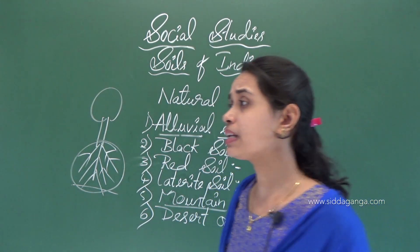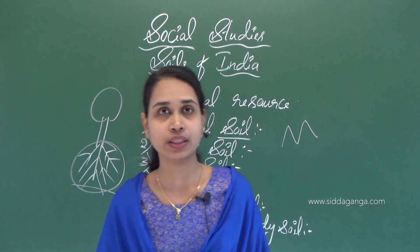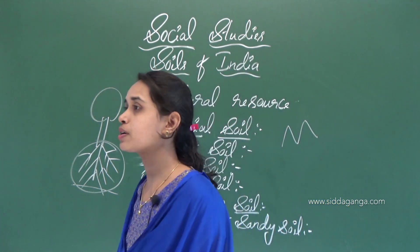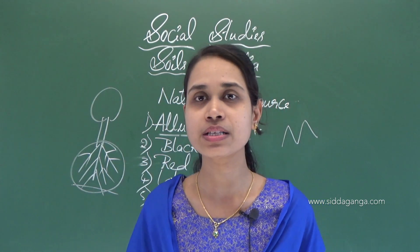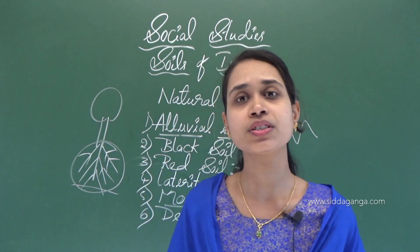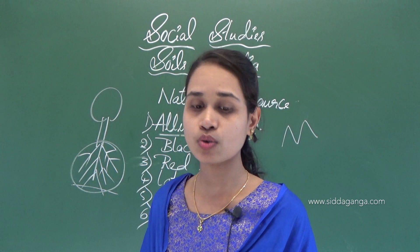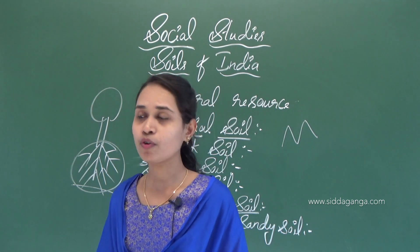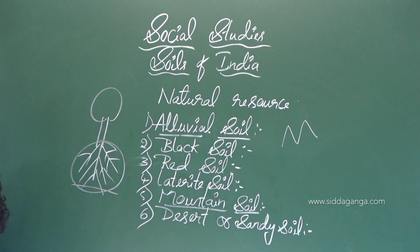Dead leaves fall in autumn, decompose, and mix with the soil. Animal excretions and dead remains of plants and animals form humus. Humus adds fertility to the soil and makes it sticky. Earthworms also play an important part in making soil fertile.